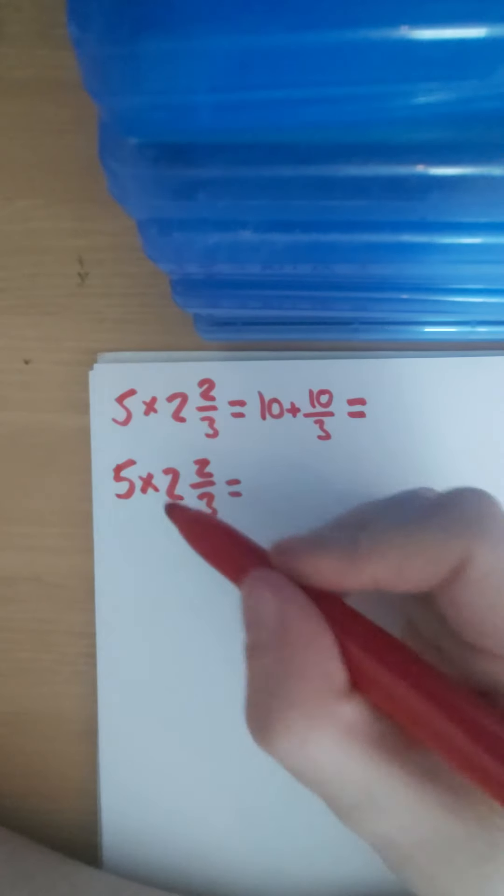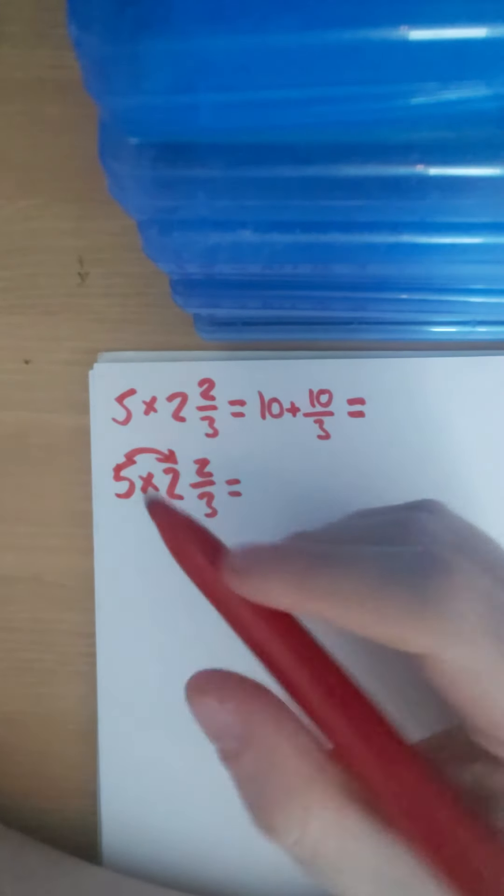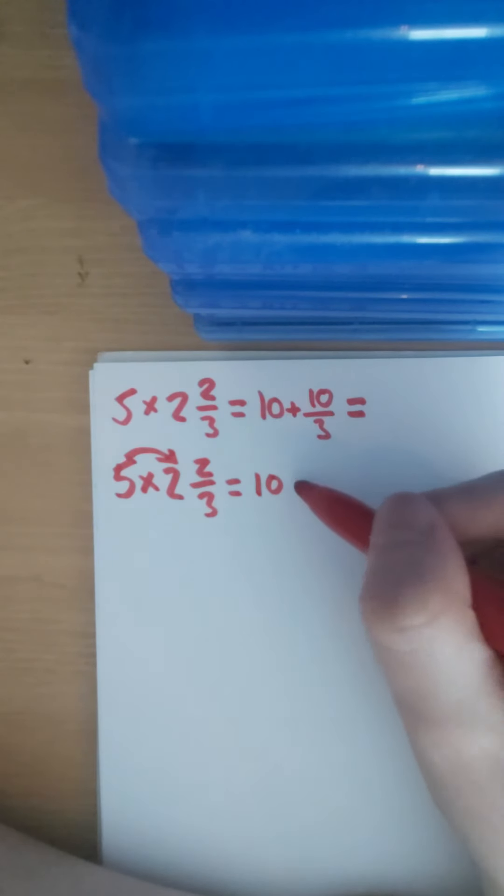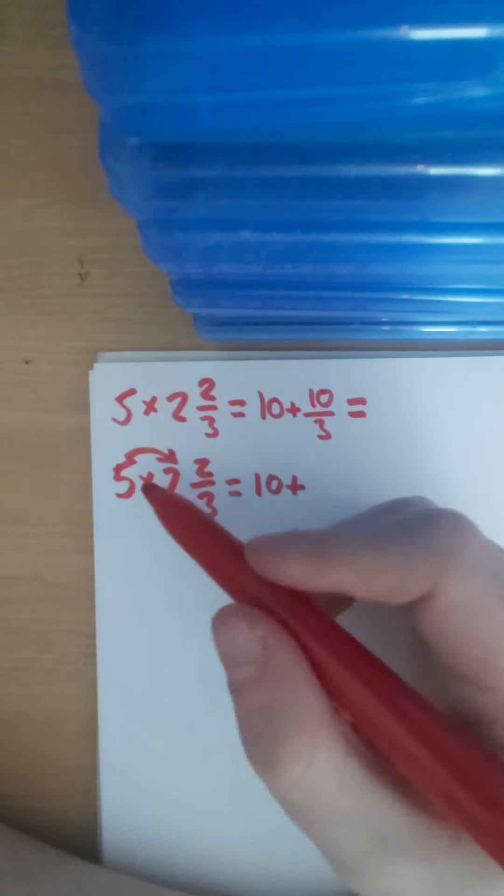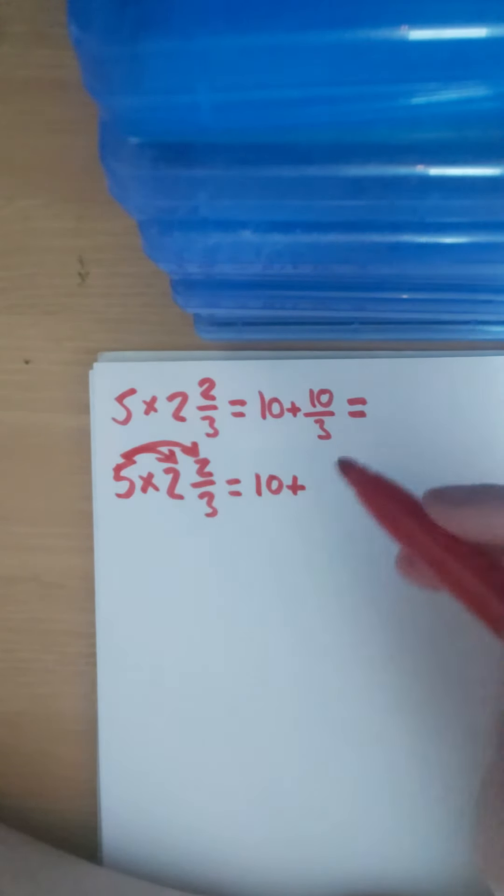So 5 times 2 and 2/3 equals, and we're going to work it out ourselves. What they've done is they multiplied the 5 by the integer part of the number, the whole number. So 5 multiplied by 2 is our 10, just as we've got up here.